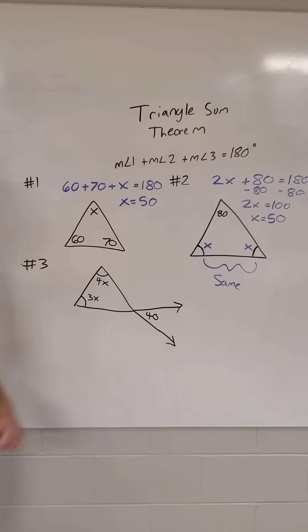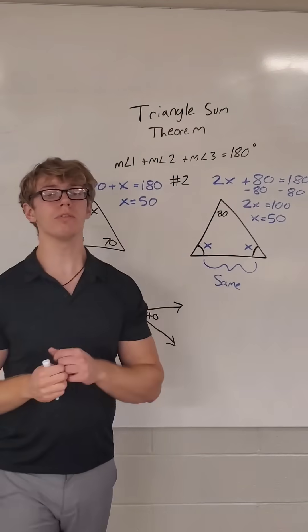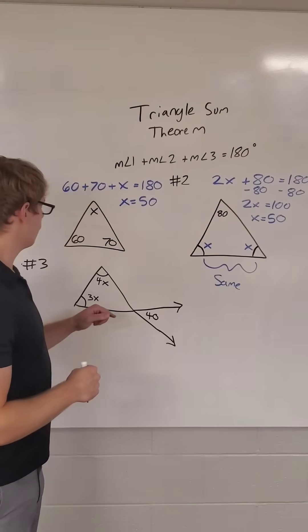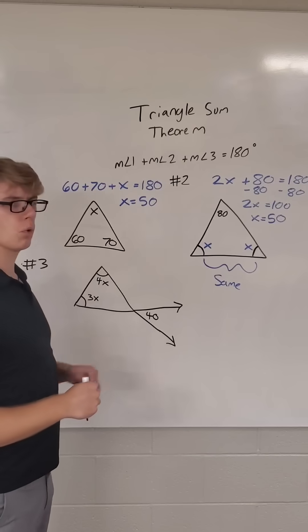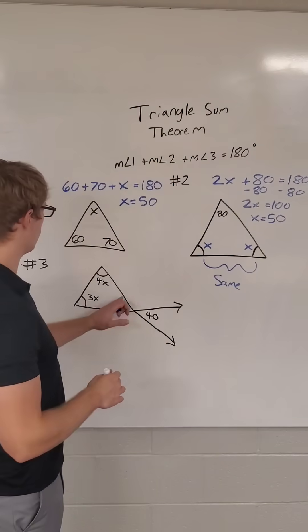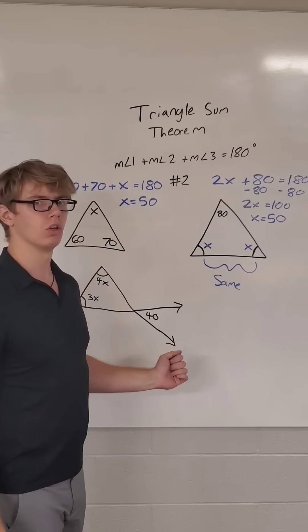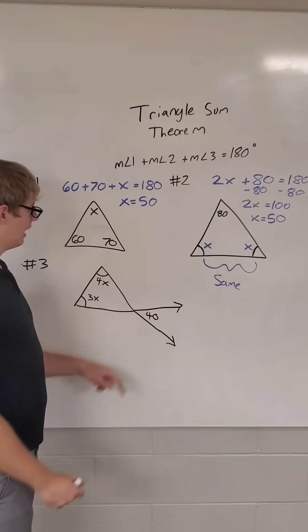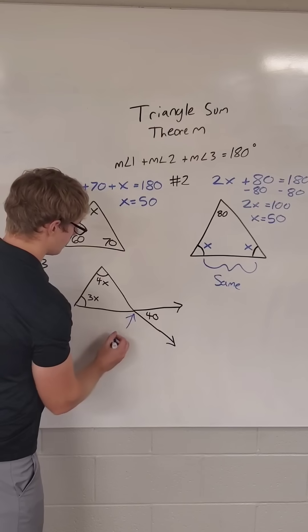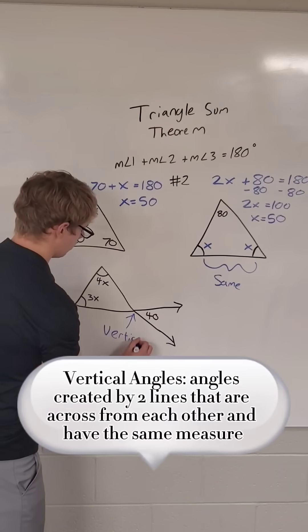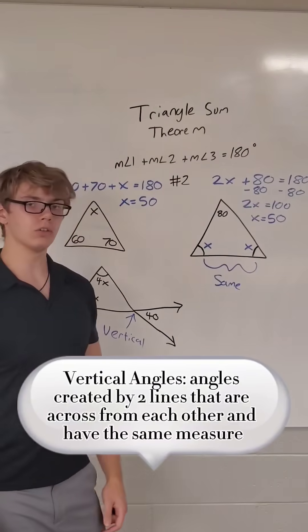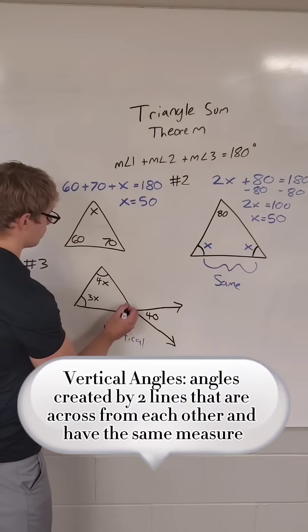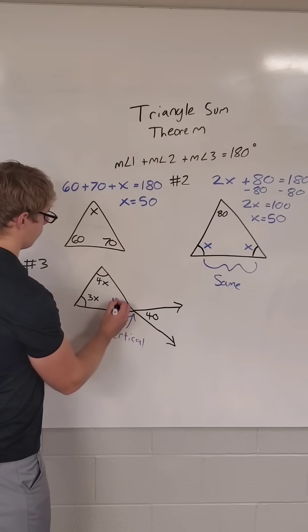Now, moving on to this example down here, there are a couple of parts to it. The first thing is we have 3x and 4x, no numbers inside our actual triangle. However, we do have this 40 down here. And this right here is an example of vertical angles. When we have vertical angles, we know those angles are congruent, which means that this is also 40.